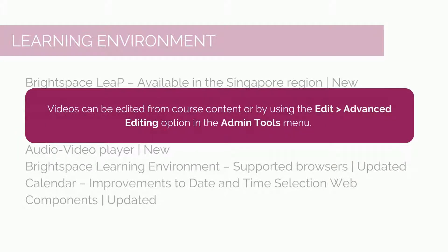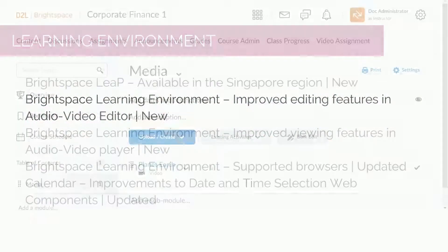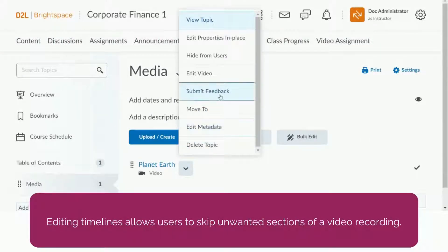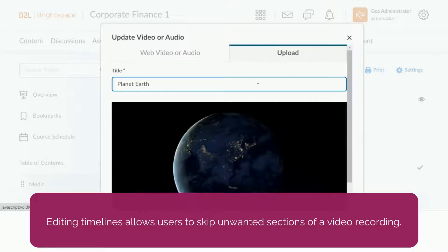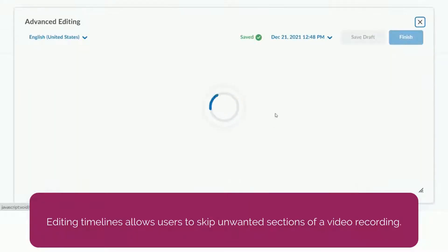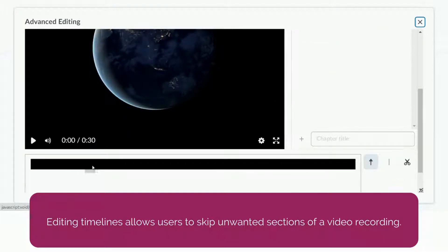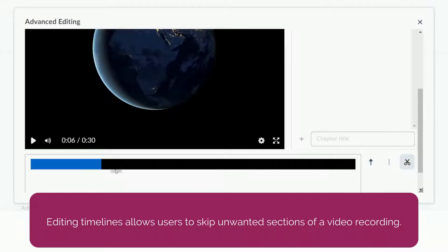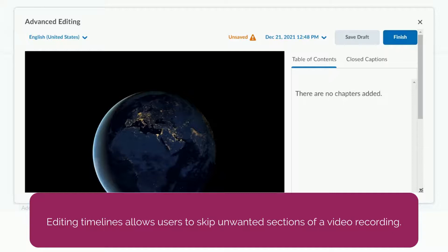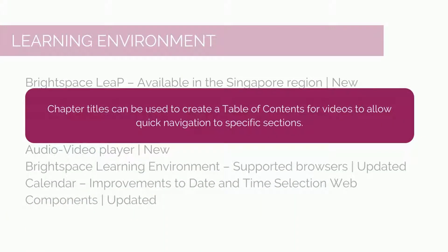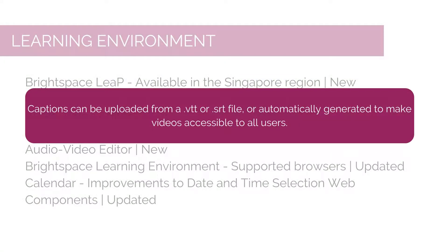Videos can be edited from course content or by using the Edit – Advanced Editing option in the Admin Tools menu. Editing timelines allows users to skip unwanted sections of a video recording. Chapter titles can be used to create a table of contents for videos to allow quick navigation to specific sections. Captions can be uploaded from a VTT or SRT file, or automatically generated to make videos accessible to all users.